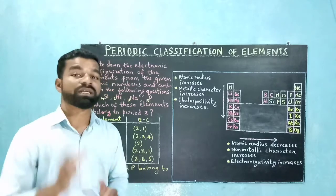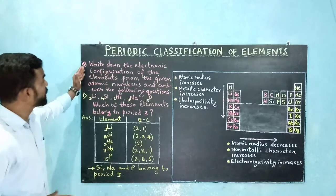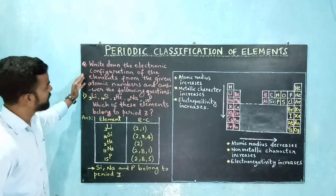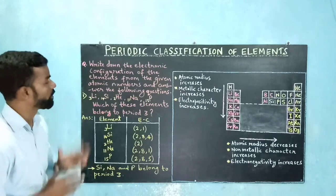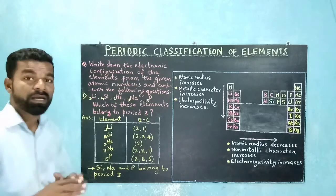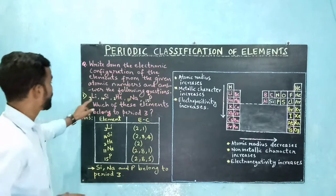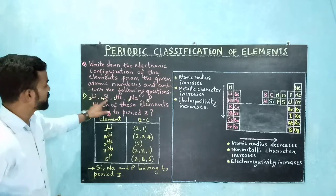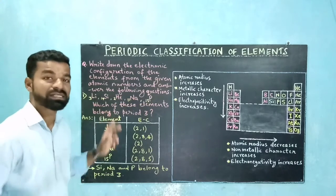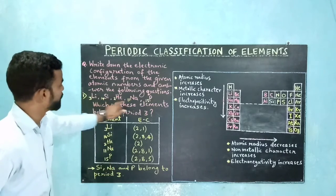Next let's see some important questions based on the modern periodic table. Write down the electronic configuration of the elements from the given atomic numbers and answer the following questions. The first set includes lithium, silicon, helium, sodium, and phosphorus. Their atomic numbers are given.